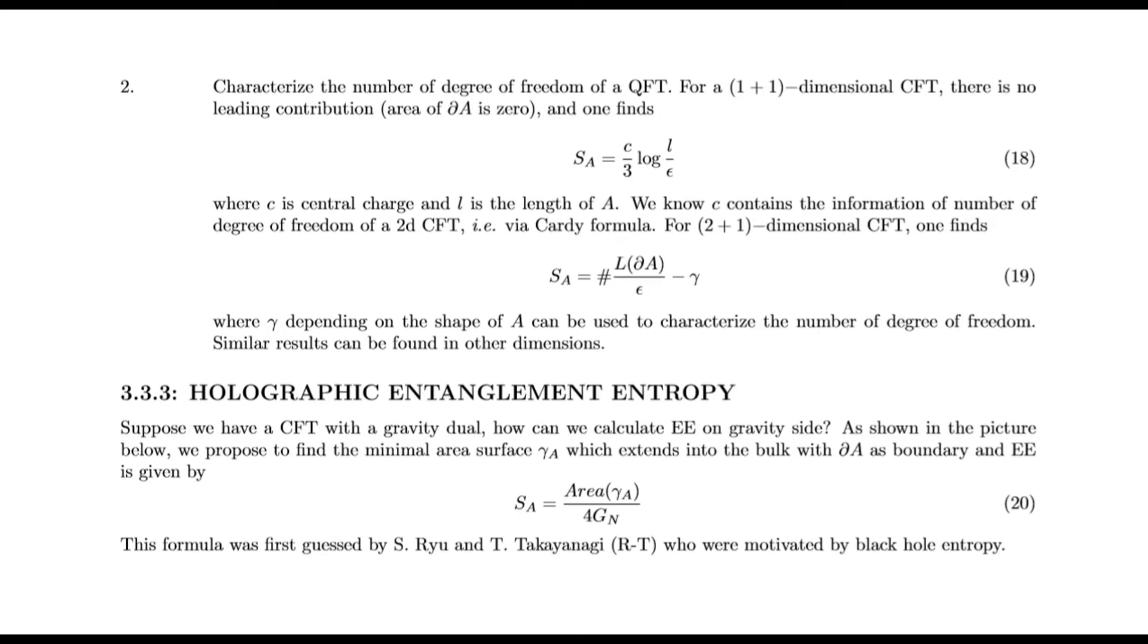To characterize the number of degrees of freedom of a CFT: For a 1+1 dimensional CFT, there is no leading contribution, and one finds S_A = (c/3)log(L/ε), where c is central charge and L is the length of A. We know c contains the information of the number of degrees of freedom of a 2-dimensional CFT via the Cardy formula. For 2+1 dimensional CFT, we find similar results, where γ depending on the shape of A can be used to characterize the number of degrees of freedom. Similar research can be found in other dimensions.